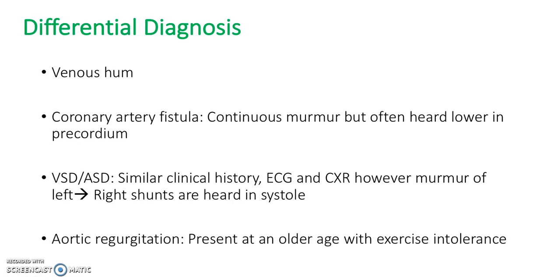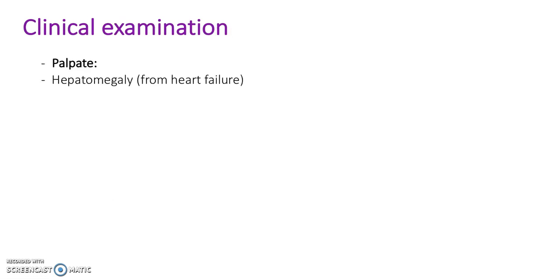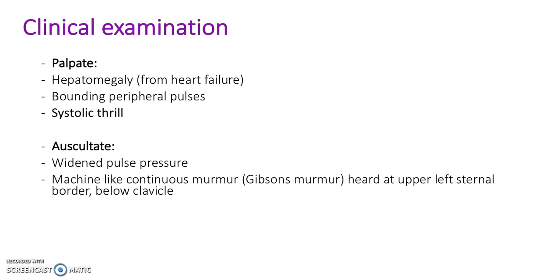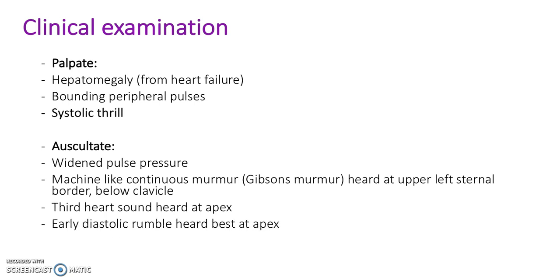Clinical examination. On palpation, hepatomegaly may be found from heart failure, although this will be from a severe PDA. You will normally find bounding peripheral pulses — this is when it feels like the heart is beating really hard, almost jumping out from the skin where the pulse is. A systolic thrill may also be present. On auscultation, you can hear a widened pulse pressure. There will be a machine-like continuous murmur, also called Gibson's murmur, heard at the upper left sternal border below the clavicle. The third heart sound can be heard at the apex. An early diastolic rumble can also be heard at the apex. And there will be low diastolic blood pressure.